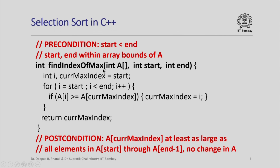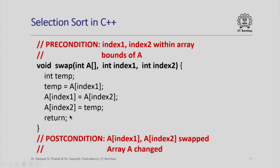Then I swapped a[current_top] with a[current_max_index]. This is how find_index_of_max looks like. Basically, we iterate from the starting position to the ending position in the given array, and if at any point I find an element greater than or equal to the currently maximum seen element, I update current_max_index, and when this loop completes I return current_max_index. The swap function is very simple: I use a temporary variable to swap a[index1] and a[index2], then return.